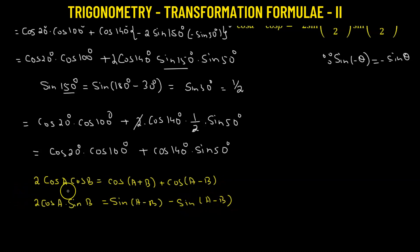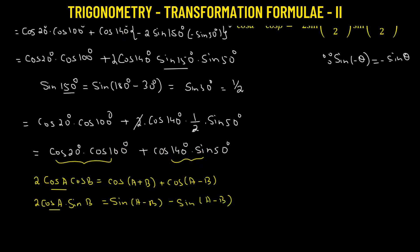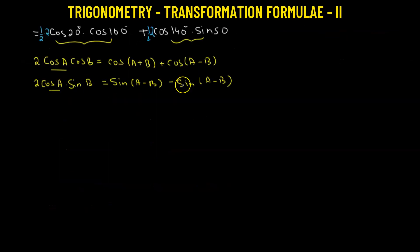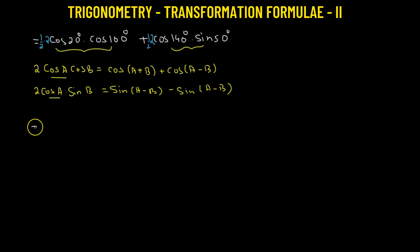We will apply the first formula to the first term and the 2cosA·sinB formula to the second term. However, we have a factor of 2 missing, so we multiply each term by one half and 2. We take one half as the common factor, then apply 2 to each product.